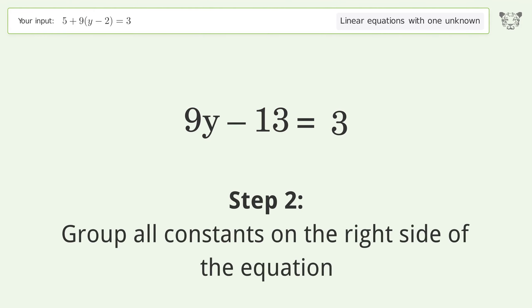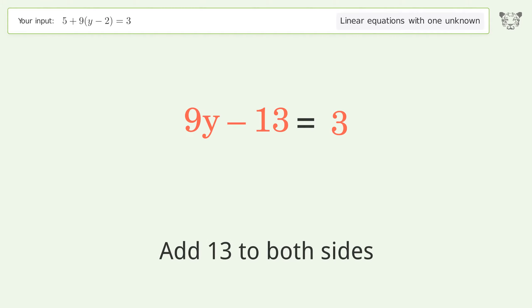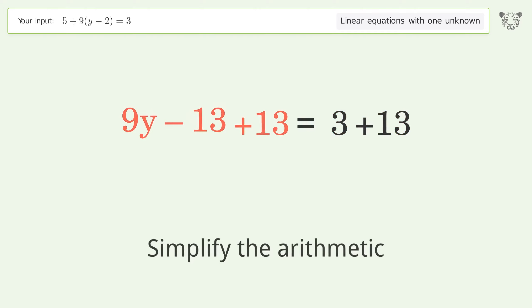Group all constants on the right side of the equation. Add 13 to both sides. Simplify the arithmetic.